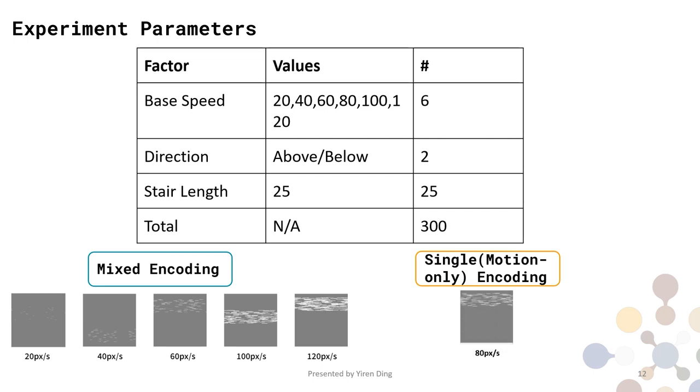Here is a screenshot of stimuli in each speed level from 20 pixels per second to 120 pixels per second. In mixed encoding condition, you can still tell the difference by static channels such as density. In single encoding condition, all stimuli look the same in screenshots.